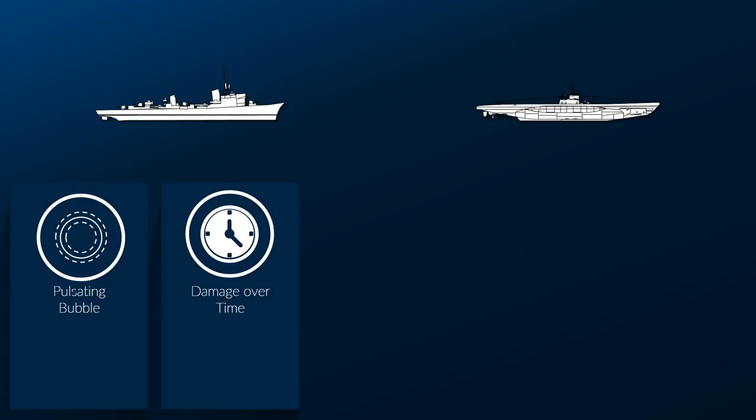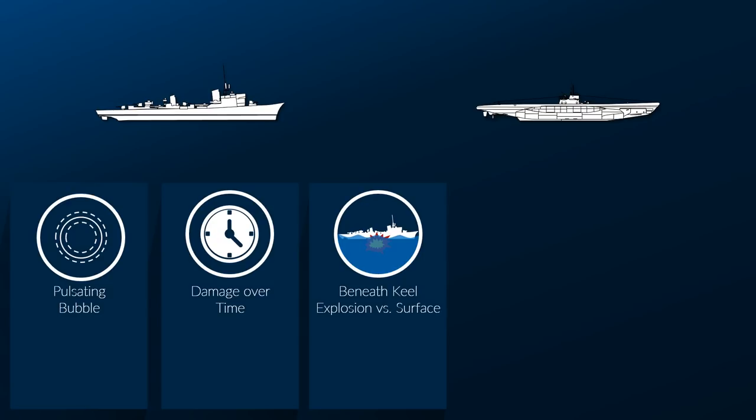Surface targets are ideally attacked with beneath-the-keel explosions, which allow to exploit the target's weight against it by creating a void beneath it, and thus break the target's back under its own weight.